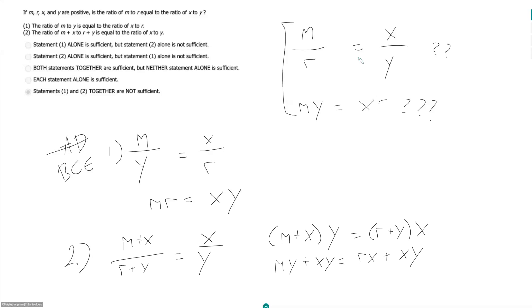What does this mean? The xy terms actually cancel out here, and I'm left with just my is equal to rx, or same as xr. So my question is asking, is my equal to xr? Statement two is telling me my is equal to xr. Therefore, that is sufficient. B.